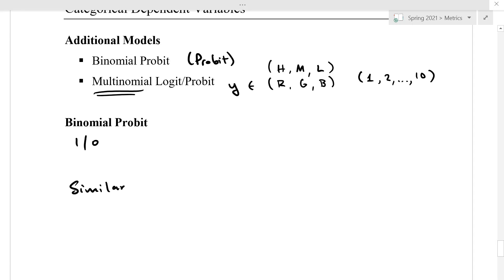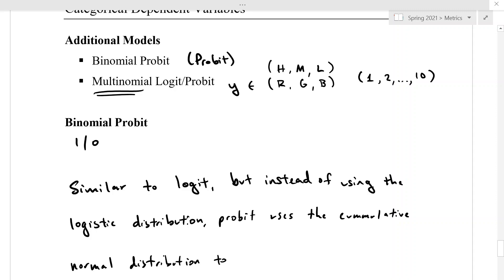but instead of using the logistic distribution to model log odds, probit uses the cumulative normal distribution to model log odds.